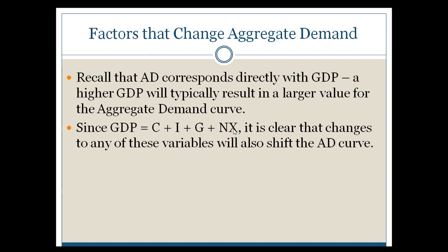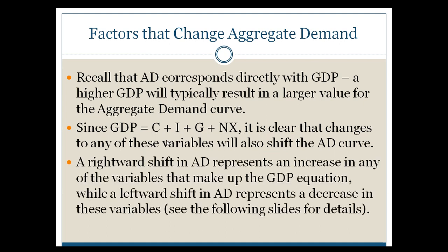Since GDP is equal to those different factors, any one of those factors changing will have a consequent impact on aggregate demand. Generally speaking, the goal for our economy is to move the aggregate demand curve to the right in most situations, barring overgrowth — trying to get more GDP created through spending.